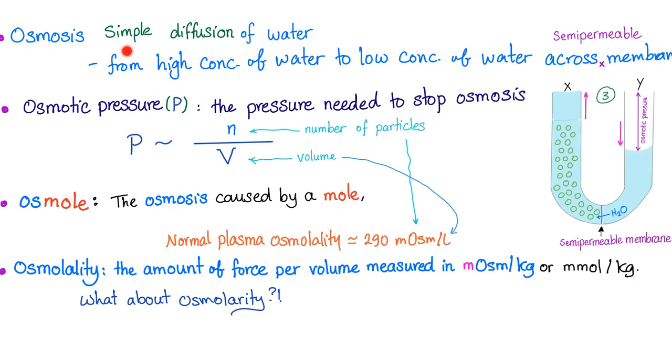So let's have some definitions. Osmosis, simple diffusion of water from high concentration of water to low concentration of water across a semi-permeable membrane. Osmotic pressure, the pressure needed to stop osmosis. It's directly proportional to number of particles. The higher the number of particles, the greater the osmotic pressure. Let's say you have lots of sodium. What's going to happen to osmosis or osmotic pressure? It's going to go up. Second thing is volume. It's inversely related to volume. The higher the volume, the less the osmotic pressure. Because when you have a higher volume, the sodium is relatively diluted. Again, osmol, osmosis caused by a mole. Normal plasma osmolality is 290 milliosmoles per liter. Number of particles over the volume.